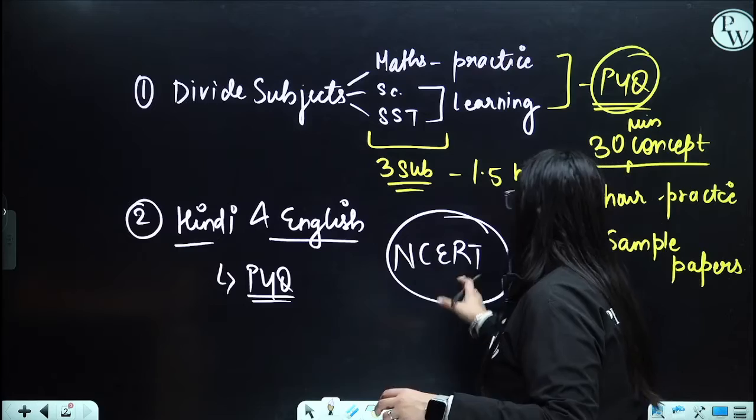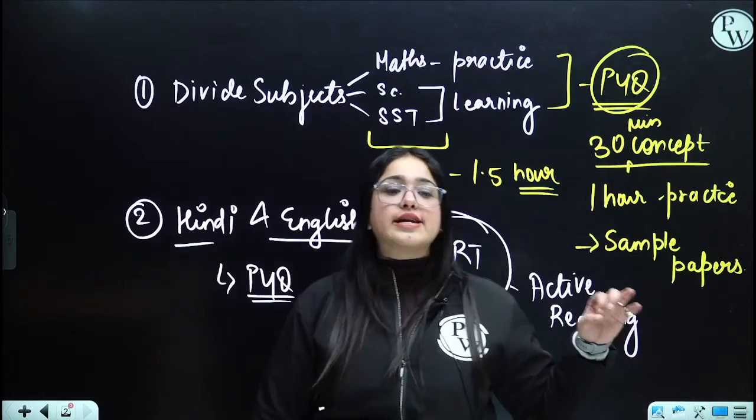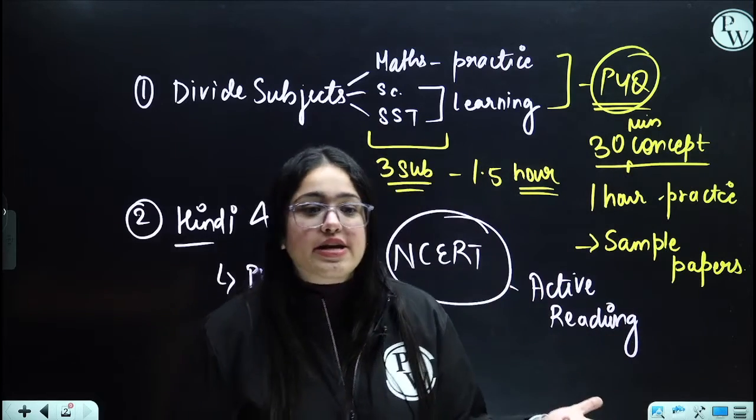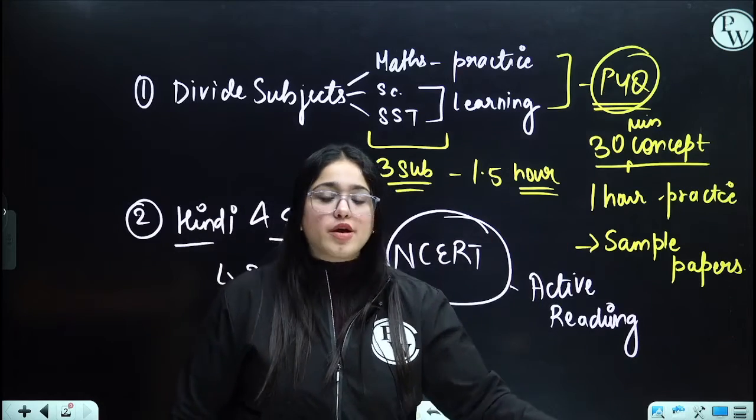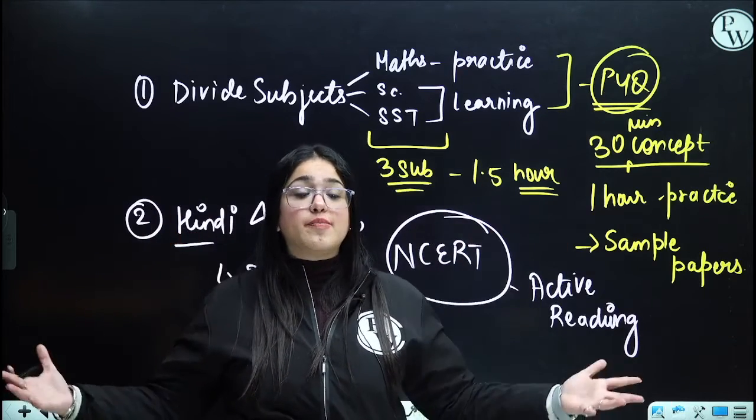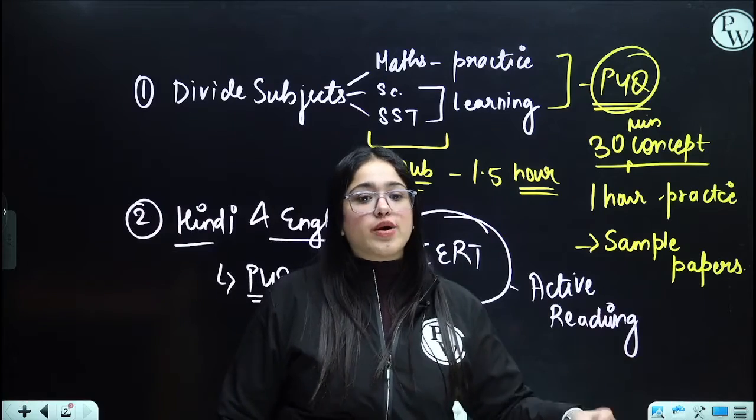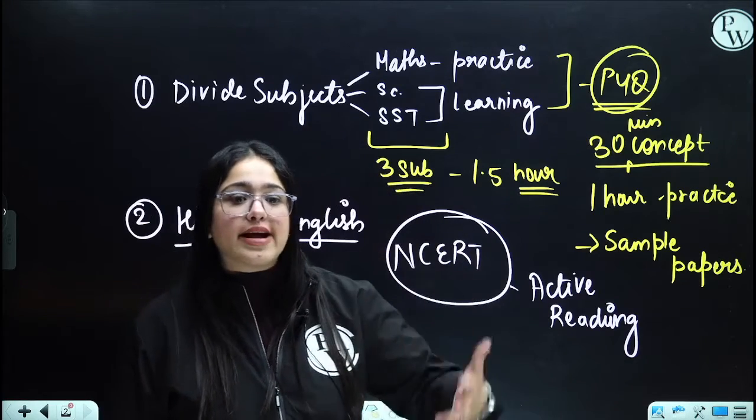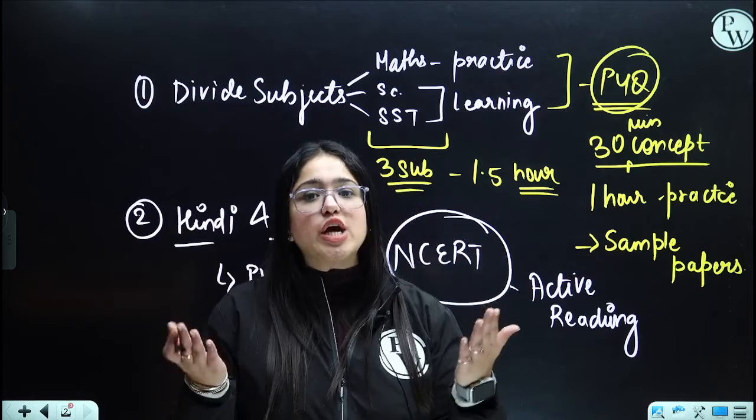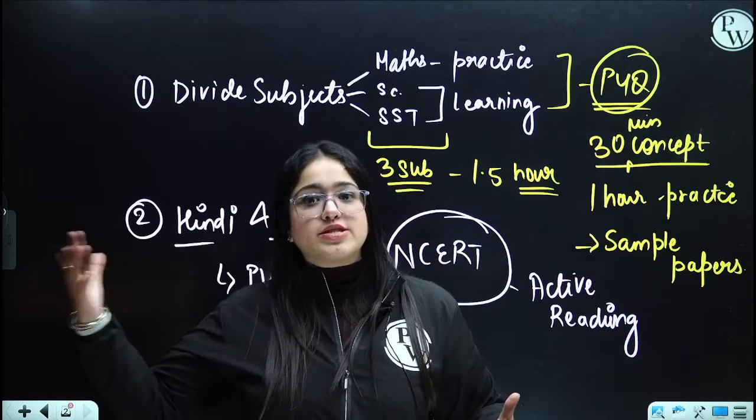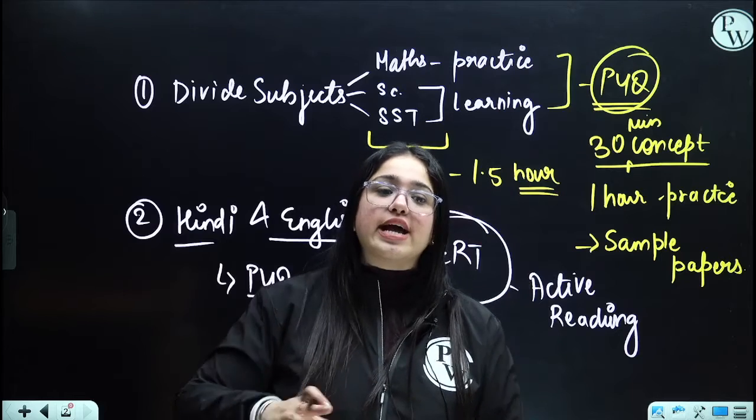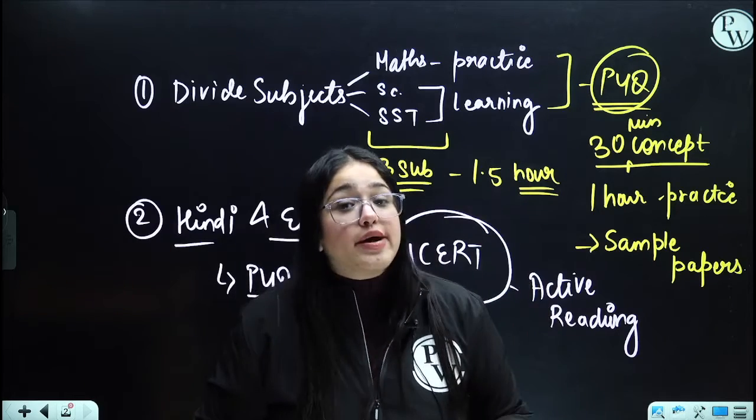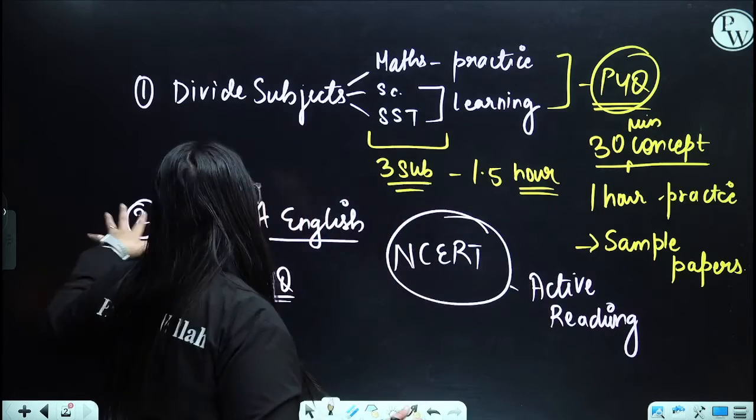The thing that could help you out for English and Hindi is the NCERT active reading. Now what do you mean by active reading? We have all the series here. You have mind maps here. You have most important questions here. The only thing you have to do is, while you are understanding the mind map, while you're listening to the mind map, open your book, listen to whatever the teacher is telling, and match it from the book. In that way, you'll be able to solve English and Hindi very easily.